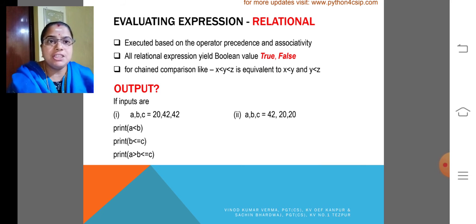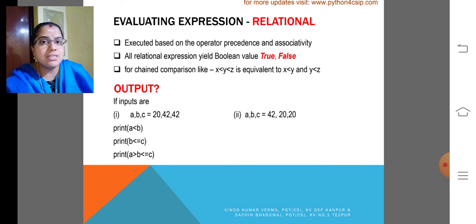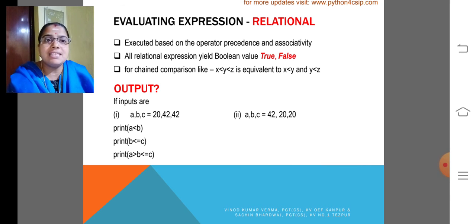Evaluating expressions relational, how the relational operations happens. Executed based on the operator precedence and associativity again. All relational expressions yield boolean value true or false. For chained comparison like which is equivalent, we already discussed about the same thing.